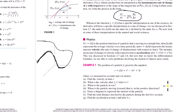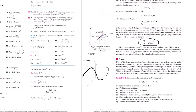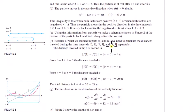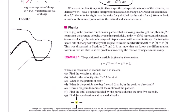s(5) minus s(0) could be zero if the particle returns to where it started. So from zero to one, take the magnitude of s(1) minus s(0); from one to three, take the magnitude of s(3) minus s(1); from three to five, take the magnitude of s(5) minus s(3); then add them all up. For acceleration at time t, that's the second derivative — just plug in t = 4.